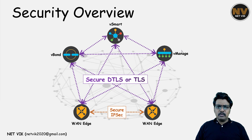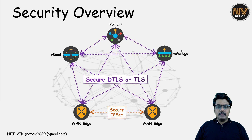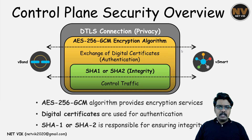On a high level, Cisco SD-WAN forms DTLS or TLS-based secure tunnels between the controllers, as well as from the managed router to the controllers. Whereas between the managed routers, they form IPsec tunnels. The biggest difference about the data plane IPsec tunnels in Cisco SD-WAN is that we don't have a Phase 1 at all. The key exchange happens via the secure DTLS tunnel with the vSmart device. For the control plane DTLS connection, encryption is handled with AES and integrity by SHA.